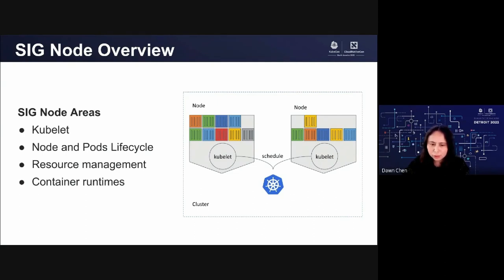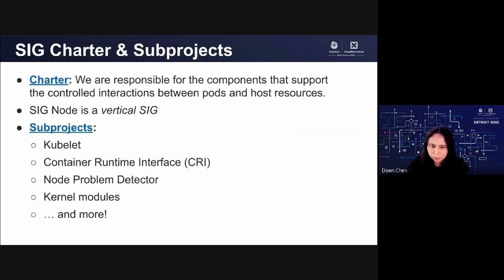The Kubelet also does node-level resource management, such as ensuring services get their requested resources, detecting node-level resource contention issues, and taking actions to prevent out-of-resource situations. The Kubelet also sends status back to the control plane — I always call the Kubelet the brain of the node. In summary, SigNode owns all controllers running on the nodes, which ensure the node itself and applications running happily. SigNode is very large and owns many projects.